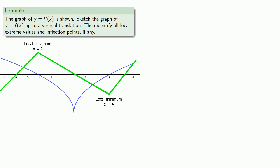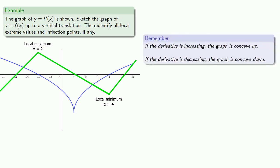Now let's talk about concavity. Remember, if the derivative is increasing, the graph is concave up, and if the derivative is decreasing, the graph is concave down.